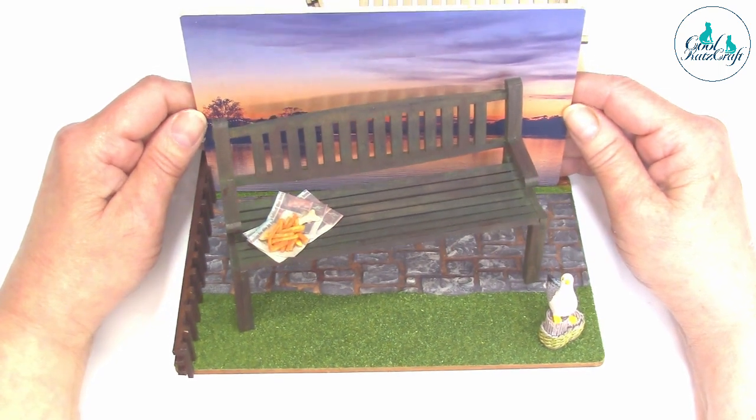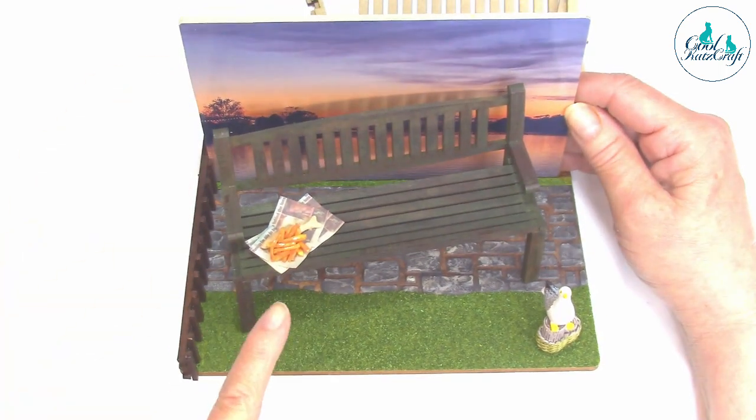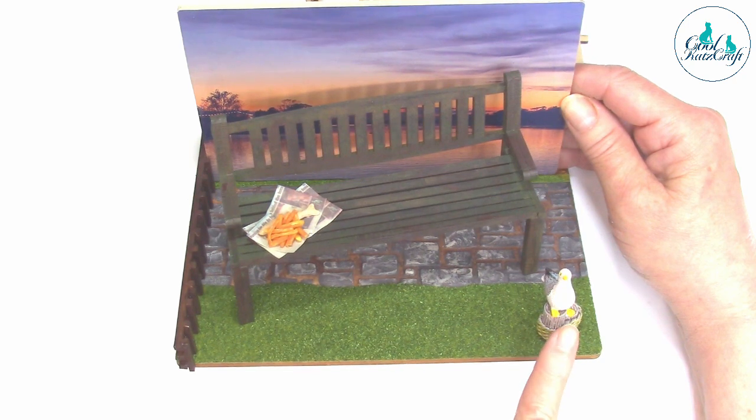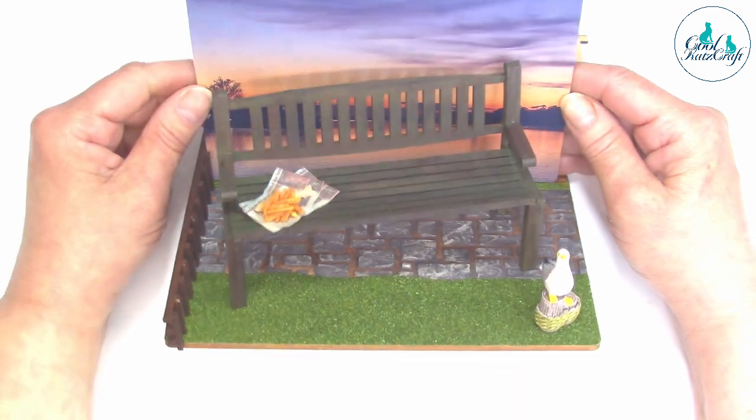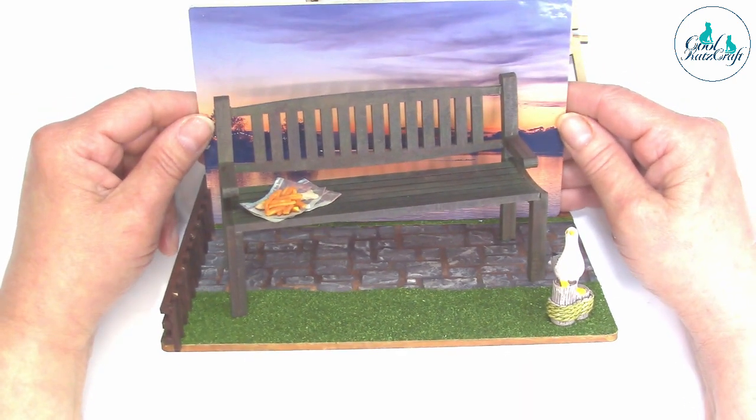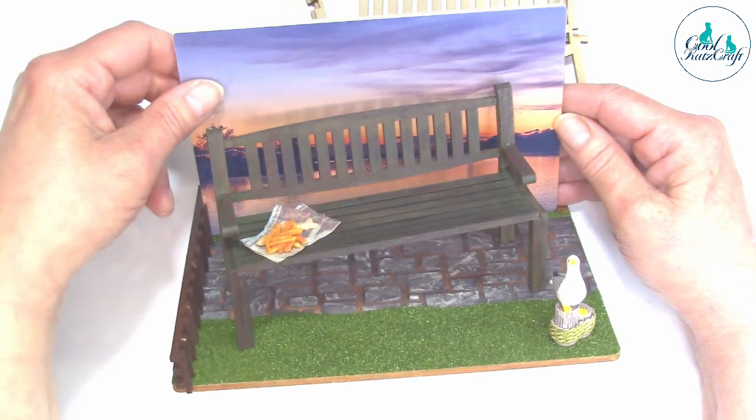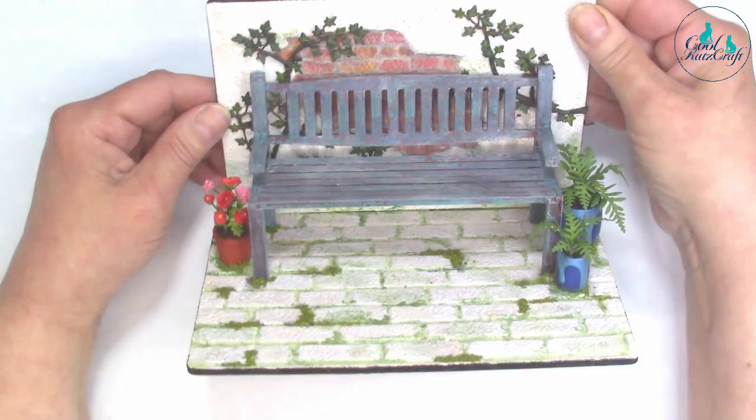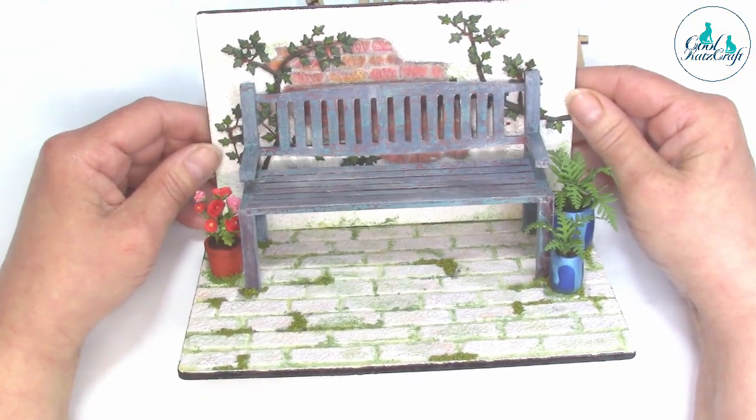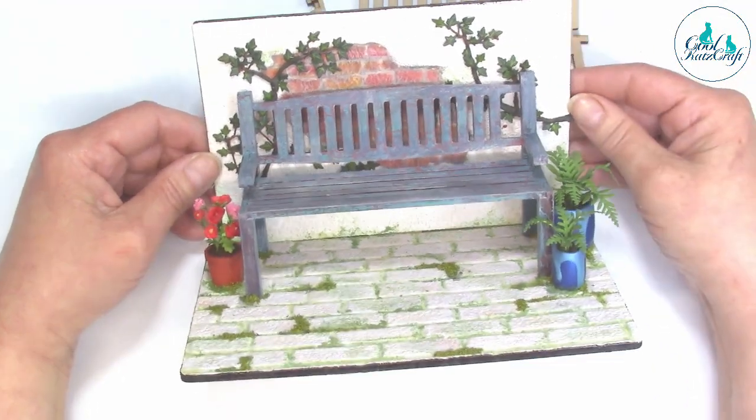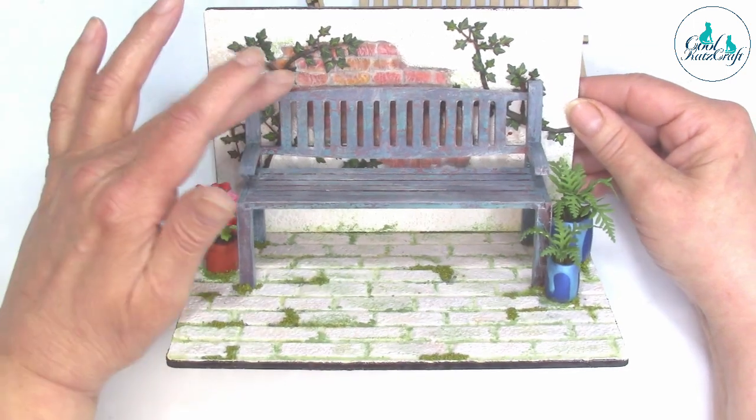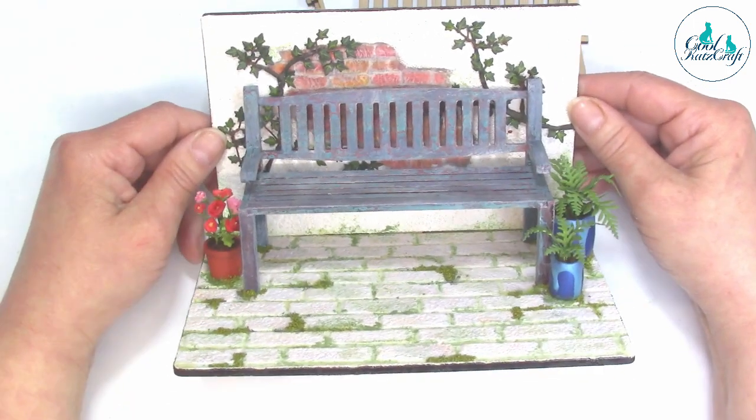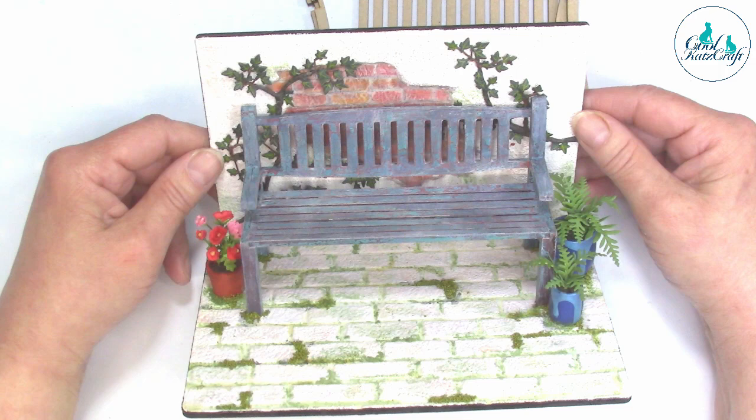This one's been decorated by Faye and we've got fish and chips with a greedy seagull with his beady eye on them. You can decorate these as you like, so she's done a beach scene with water behind, and this one is more of a derelict garden with hot plants at the side and a damaged brick wall behind.